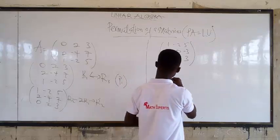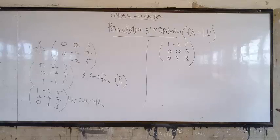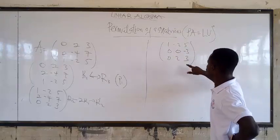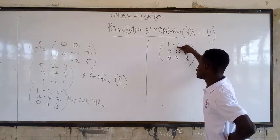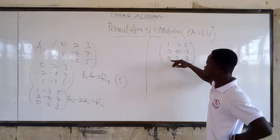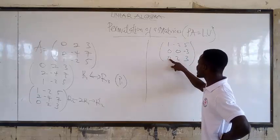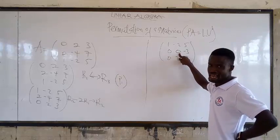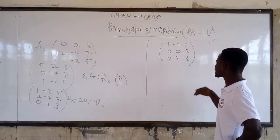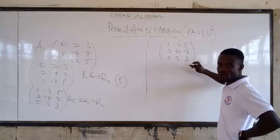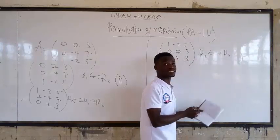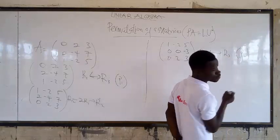Now we want to make the entry at row 2, column 2 non-zero. We can't multiply two rows together. What we can do is swap row 2 and row 3 — that brings our second permute. So row 2 and row 3 are interchanged.